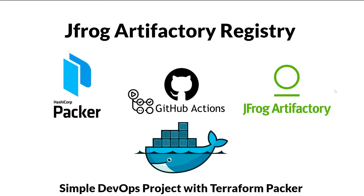Welcome back friends. Today we are going to see the example of the Docker push over the JFrog Artifactory. Till now we have seen different examples where we push the Docker image to different repositories including Azure, AWS, GitLab container registry, and Docker Hub. Today we are going to understand the JFrog Artifactory where we are going to post the Docker image.